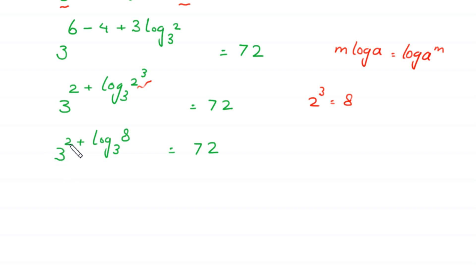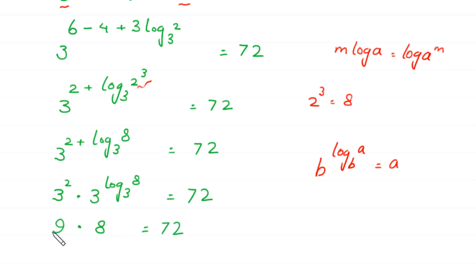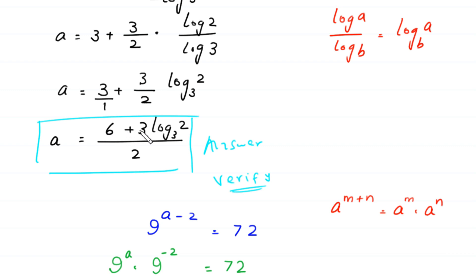Now, 3 to the power (2 plus log base 3 of 8) can be written as 3 squared times 3 to the power log base 3 of 8 is equal to 72. And 3 to the power 2 is 9. By using the log property b to the power log base b of a is equal to a, this 3 to the power log base 3 of 8 is equal to 8. So we have 9 times 8, which is 72, is equal to 72. The left hand side equals the right hand side, so this value of a — (6 plus 3 times log base 3 of 2) all over 2 — is a valid solution.